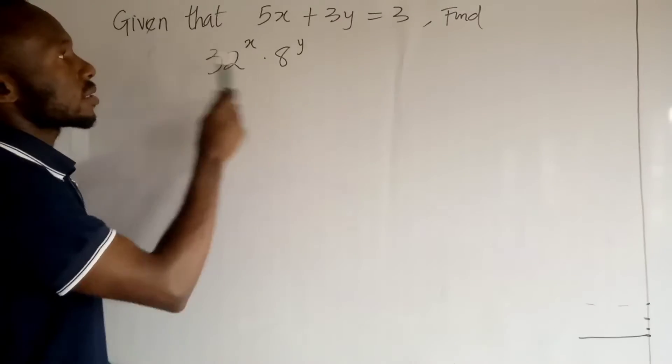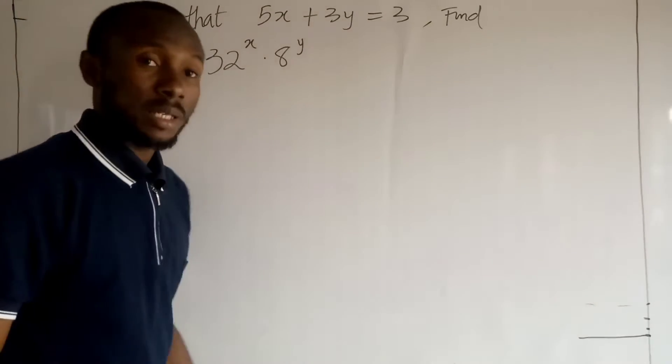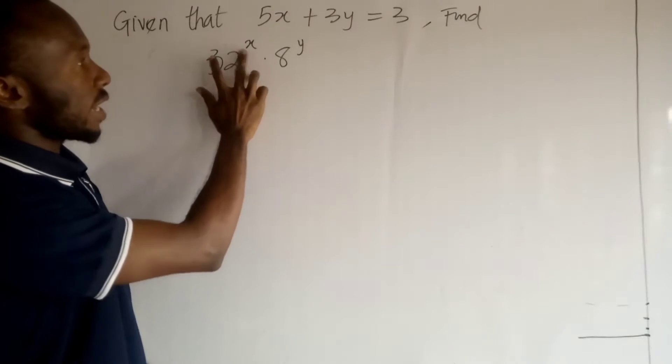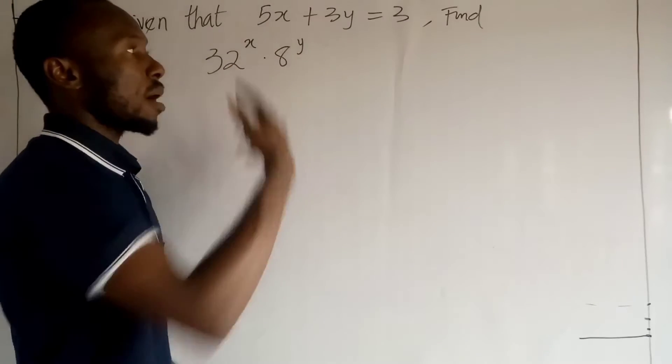We are given that 5x plus 3y is equal to 3, and we are asked to find the value of 32 to the power x times 8 to the power y.